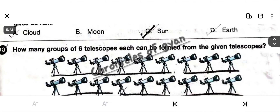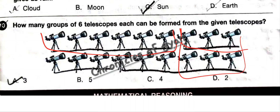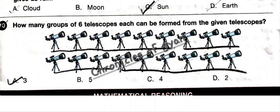Question 10: How many groups of 6 telescopes each can be formed from the given telescopes? You have to make sets of 6. There are 6 here and again 6, making a total of 3 sets. So the answer is option A: 3.